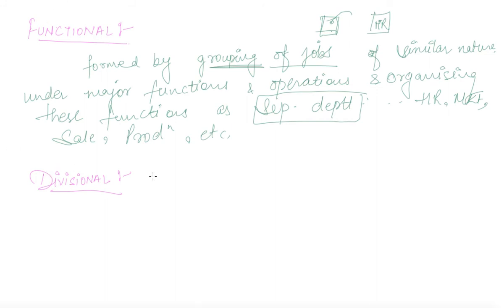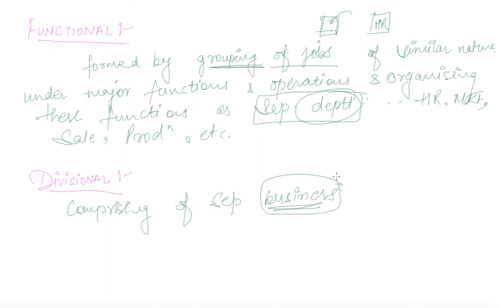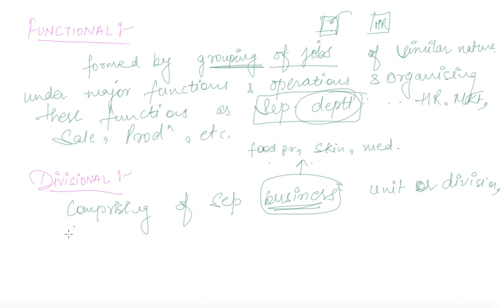Now if we talk about your divisional structure — divisional structure is an organizational structure comprising of separate business units and divisions created on a certain basis. Note the difference: here it is business, not department. In case a single organization is headed by different business operations, as with Patanjali who are engaged in so many kinds of business — food products, skin care, medicine — each division is having their own business, comprising of separate business units and divisions created on certain basis.